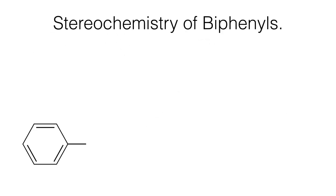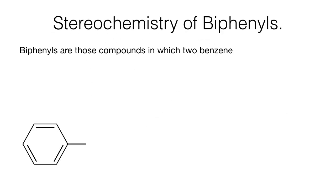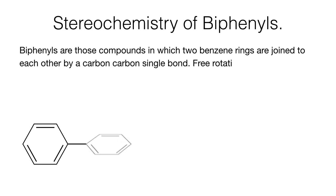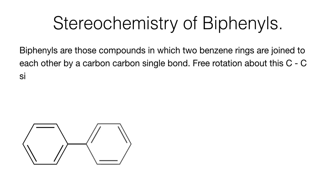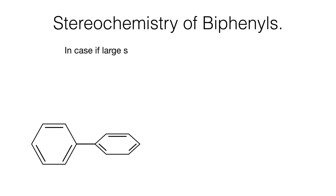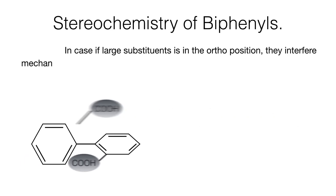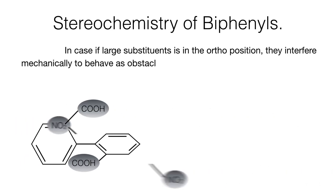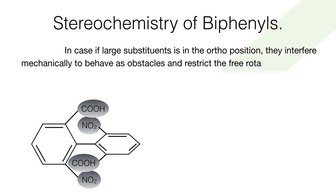Stereochemistry of biphenyls. Biphenyls are those compounds in which two benzene rings are joined to each other by a carbon-carbon single bond. Free rotation about this carbon-carbon single bond is possible. However, in case if large substituents are in the ortho position, they interfere mechanically to behave as obstacles and restrict the free rotation.